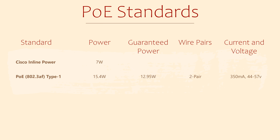Type 1 PoE uses two powered wires and provides 15.4 watts of power per port. It is still used quite commonly and is really good for powering small appliances like desk phones and small wireless access points. Like any power solution there is a little power loss as power runs over the cable — it's no different with network cables. So Type 1 PoE supplies 15.4 watts at the port but it only guarantees 12.95 watts at the powered device.